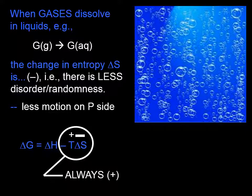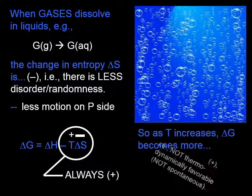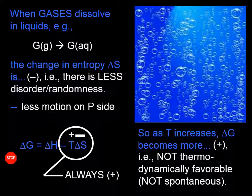Therefore, as temperature gets bigger and bigger and bigger, that circled quantity becomes a bigger and bigger positive number. So as temperature increases, delta G is more likely to be positive. That is, not thermodynamically favorable, or not spontaneous.